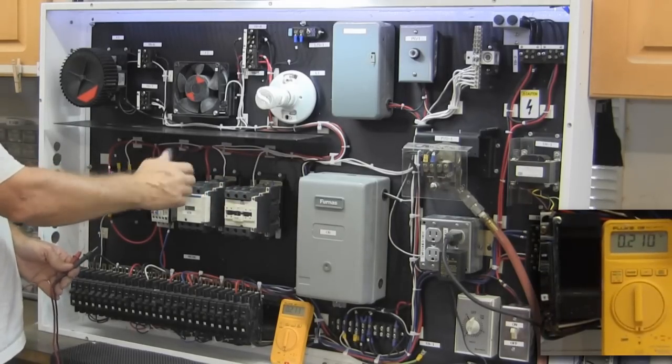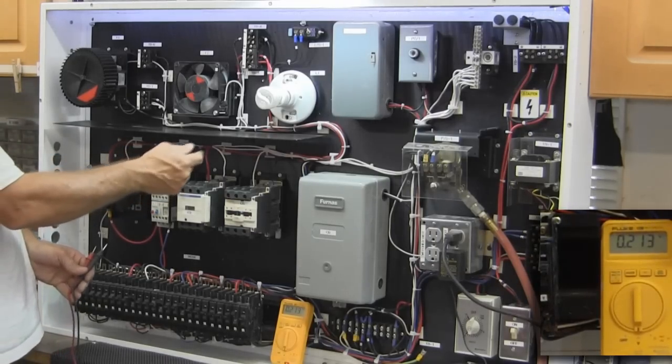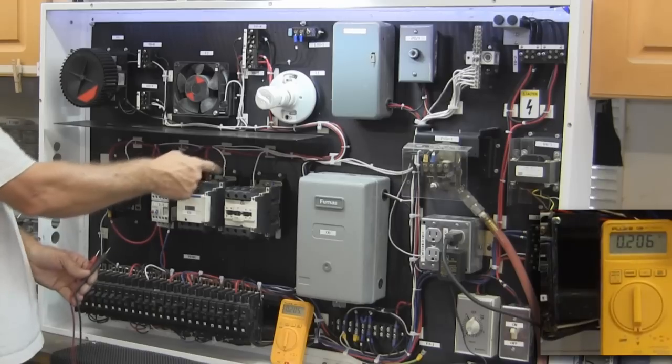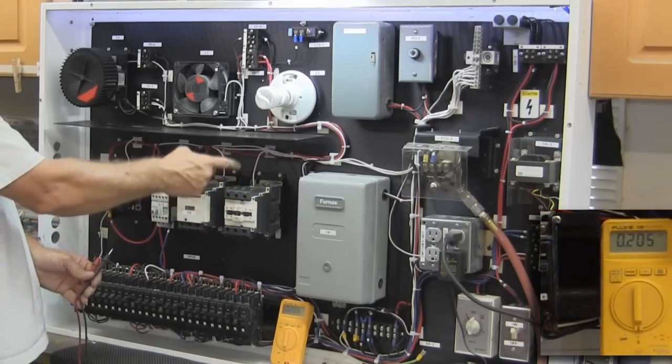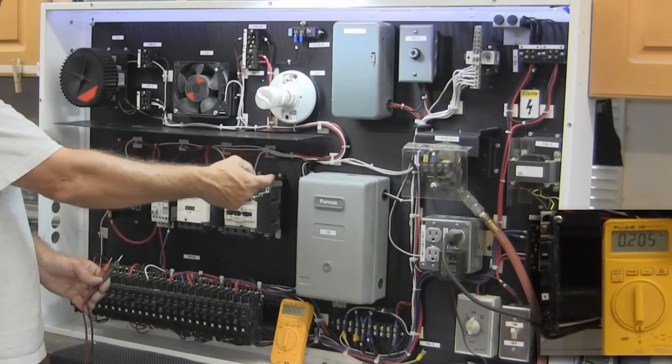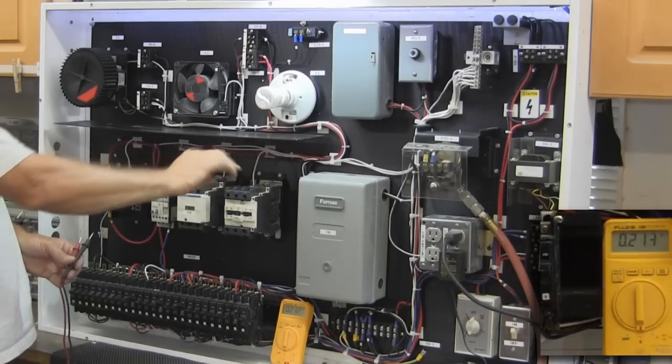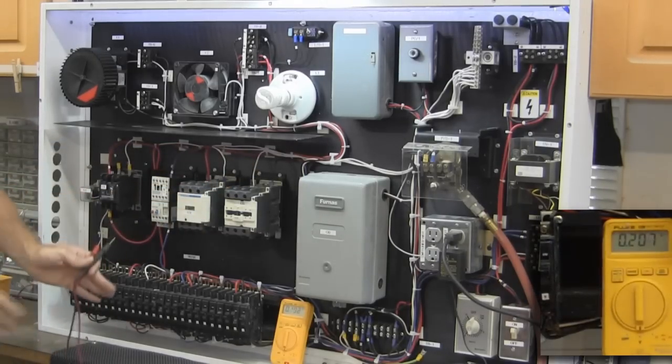On the left side, which is A1, I have the hot and on the A2, I have the neutral. This particular one, I have A1 is the neutral and A2 would be the switched hot. So it doesn't really matter what side of that coil goes on in a basic system.